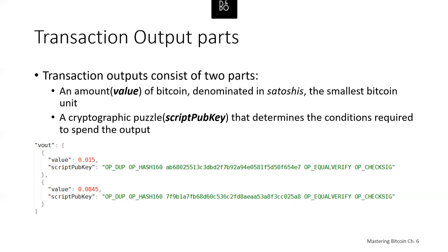The value shown here is in Bitcoins — 0.015 or 0.0845 — but if we were looking at the transaction as it's actually being sent, it would be an integer number, not a decimal, denominated in Satoshis. We'll talk about how you lock and unlock these Bitcoin through the cryptographic puzzles when we talk about Bitcoin script.